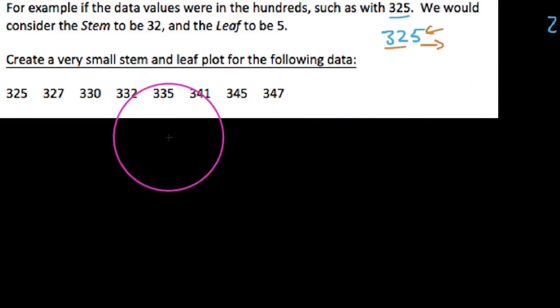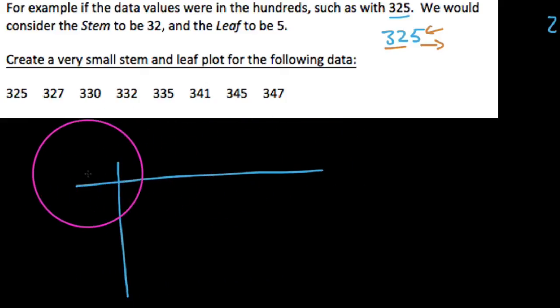So what we're going to do is we're actually going to look at this data right here that is just random data. As a matter of fact, I will point this out to us, it's already in order, so that's going to kind of help us out here. So you would put it in order first, but what we're going to do is create our stem-and-leaf plot.